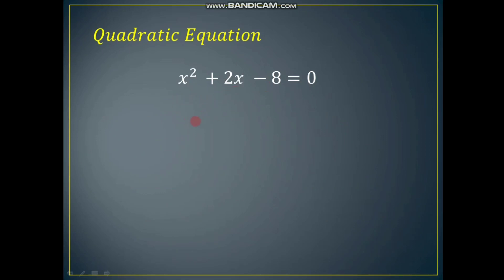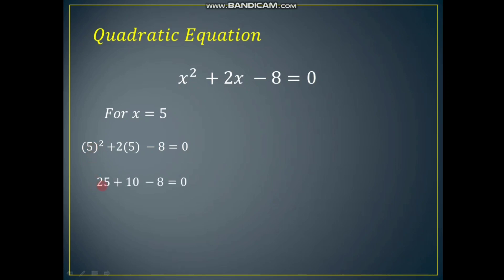Now apart from these two values, if we take x equal to 5, we get 5 squared plus 2 times 5 minus 8, which gives 25 plus 10 minus 8 equals 35 minus 8 equals 27, which is not equal to 0. So the equation is not satisfied for x equal to 5. Only x equal to minus 4 and x equal to 2 are the solutions.